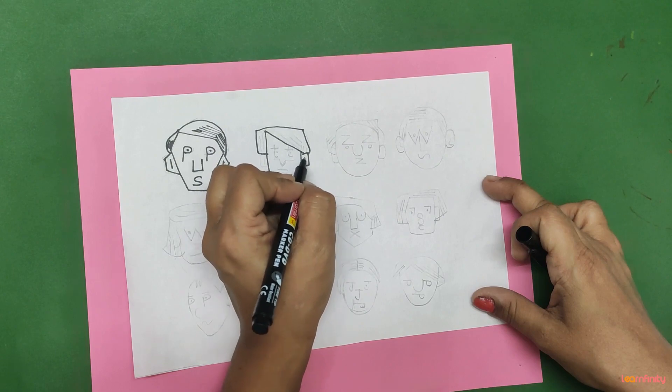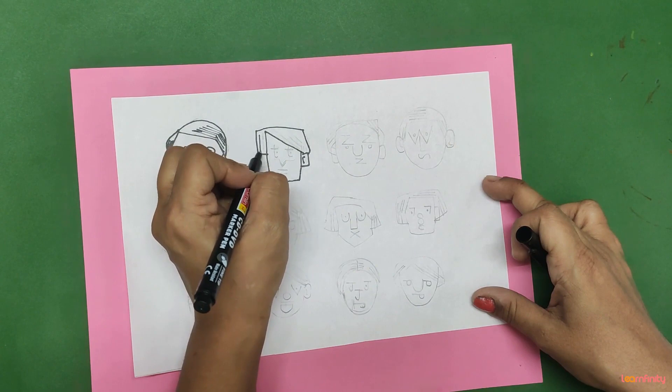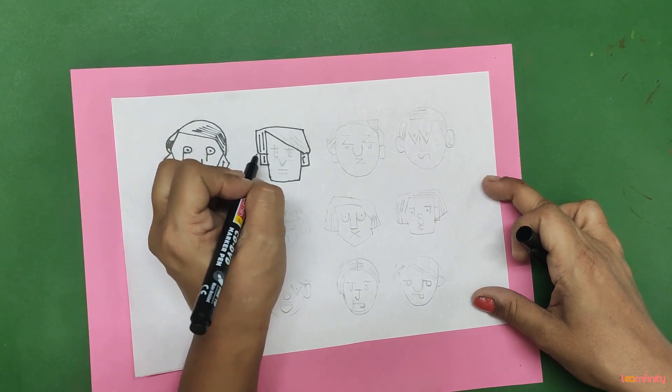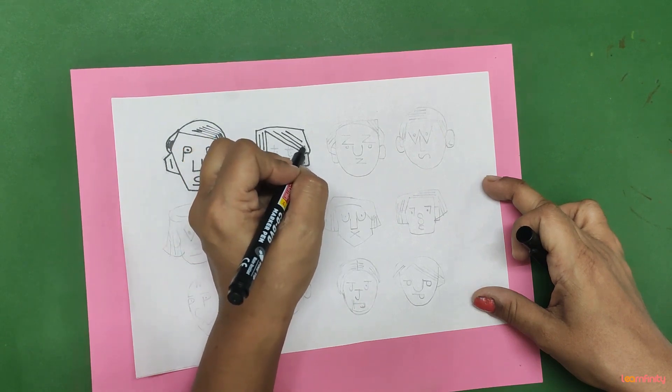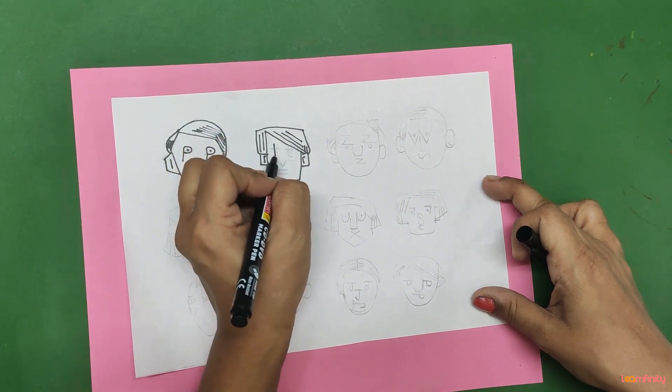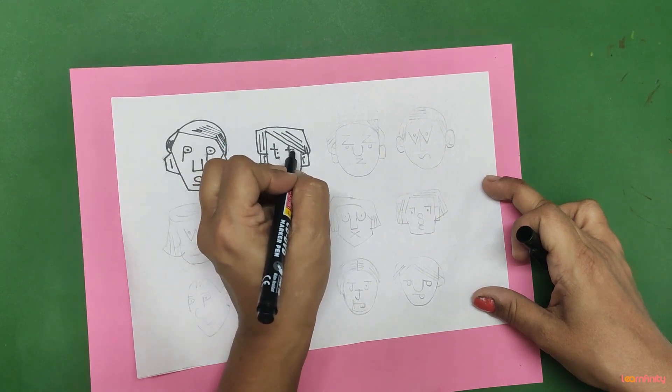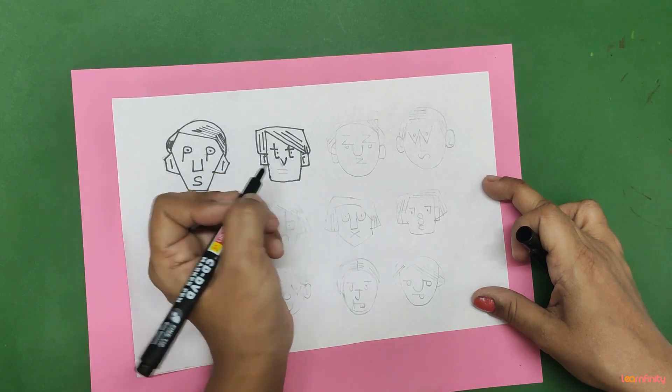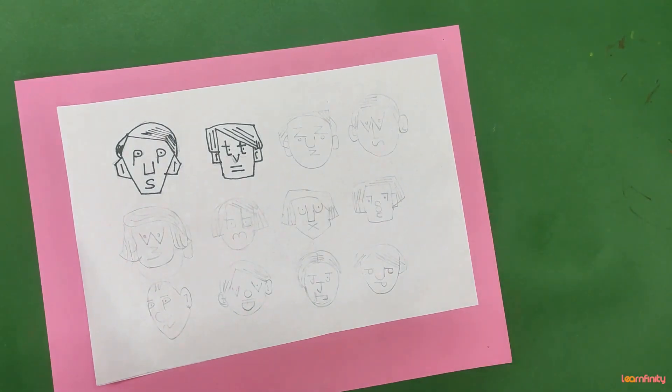Then this side we will draw this curve shape, this side C shape and one line. Here are some slanted lines for hairs. Now here we are going to write T, small T and V and 11, number 11 like this.